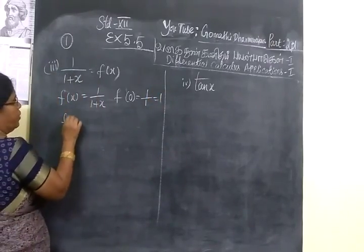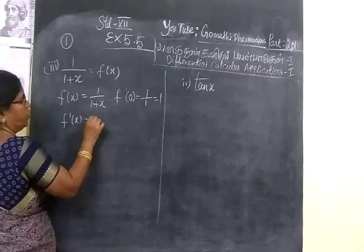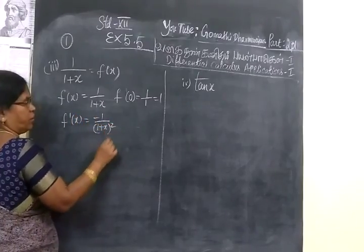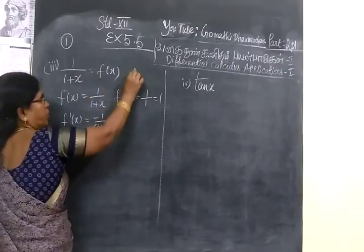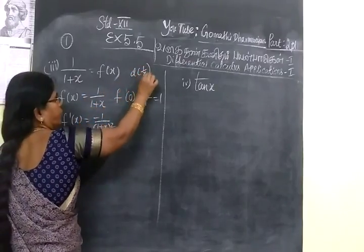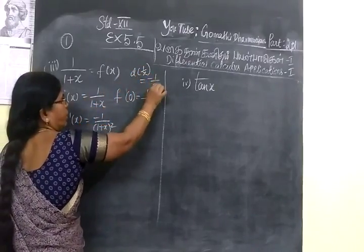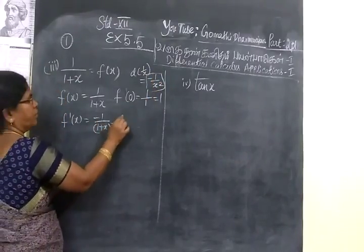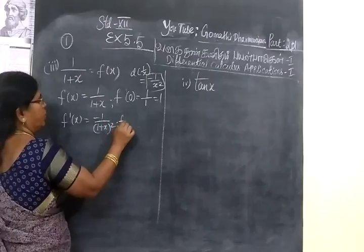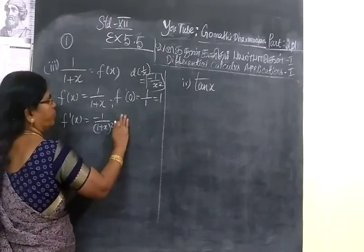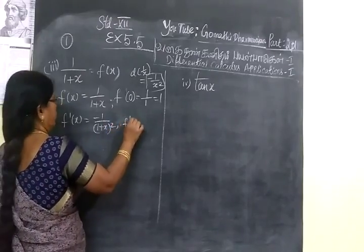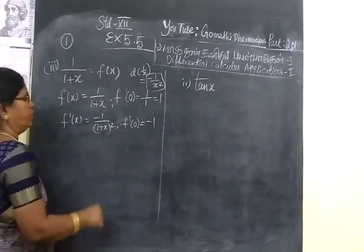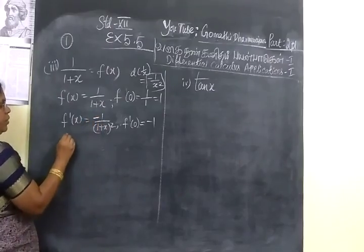Next we find f dash of x. So this is equal to minus 1 by 1 plus x whole square. Because we know d of 1 by x equal to minus 1 by x square. So in the same way you are writing this. And immediately you find f dash of 0. This 0 product you need to know. Minus 1. This numerator is minus 1.